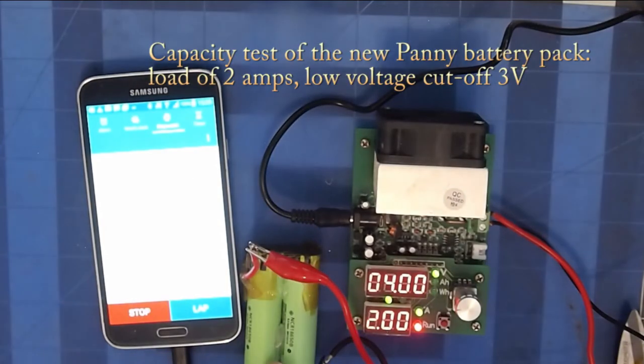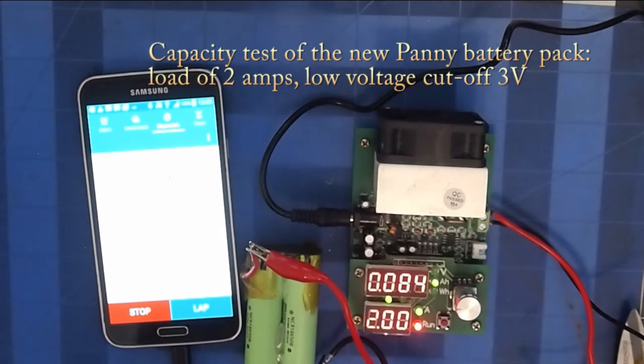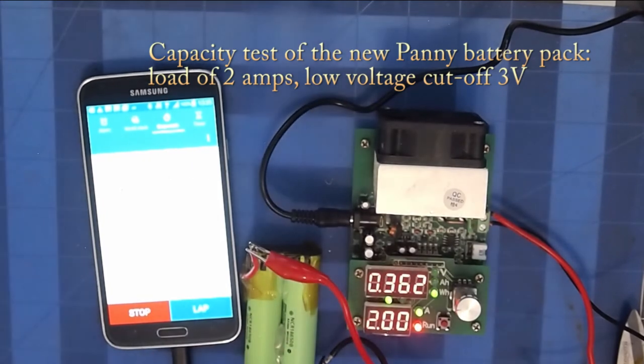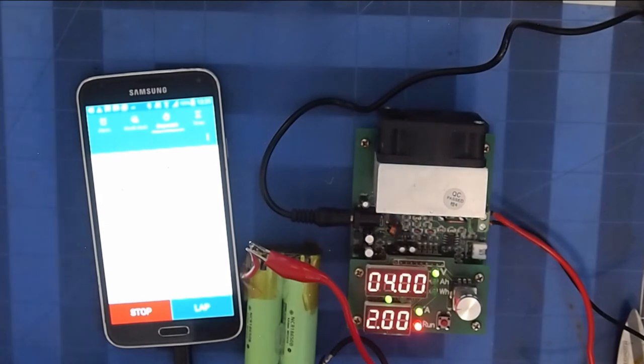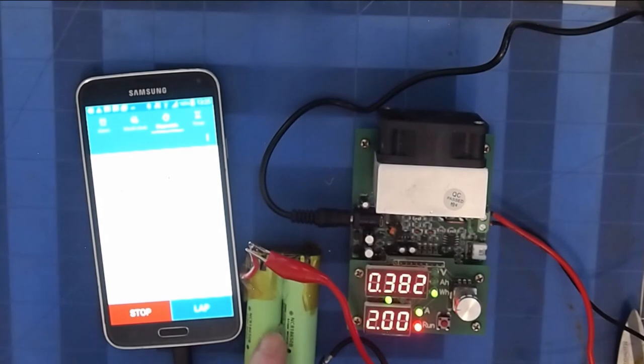So now we've got the NCR18650B Panasonic battery pack. Spot welded and we've got the mains wires soldered to the nickel strip and attached to our capacity tester. And now we're running a load test on the capacity of this new pack.